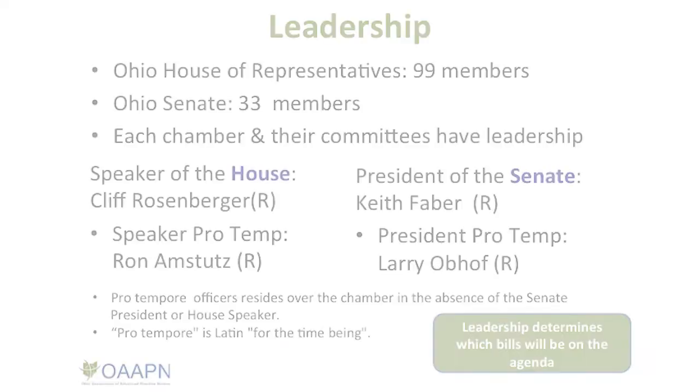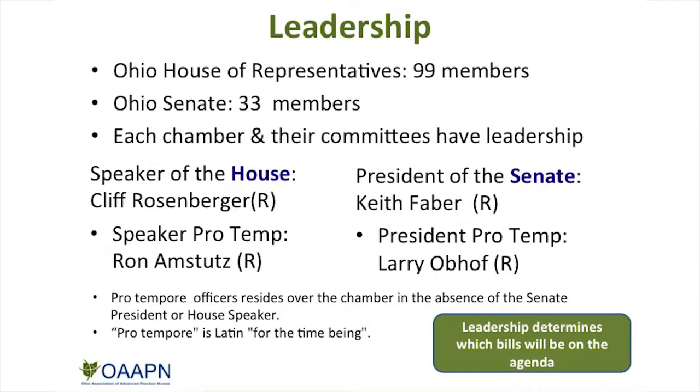If the bill dies, the sponsor must introduce the bill again in the next General Assembly. There may be the same sponsor or a different sponsor — there are new players in the field. The legislature changes at the end of the General Assembly, and new legislators will be in the House and in the Senate. All these things affect the bill's movement through this process. Some political factors and timeframes that affect movement include the budget — a budget bill takes high priority and therefore other bills will not be heard.